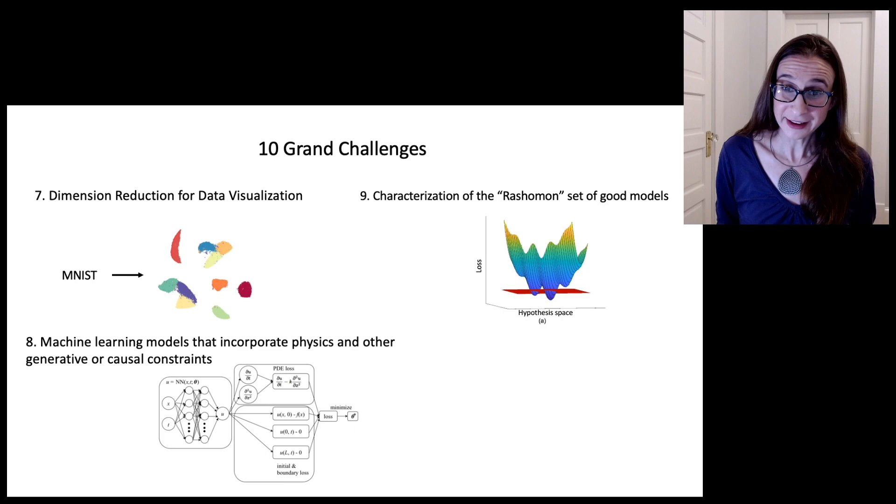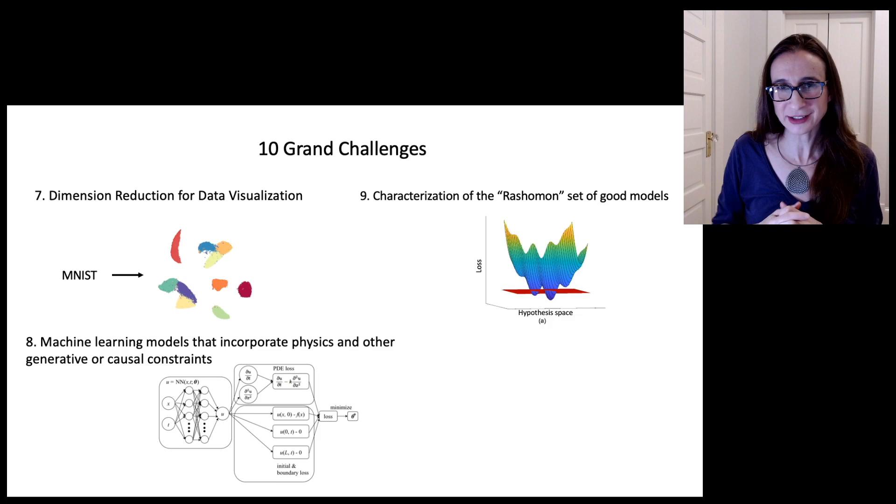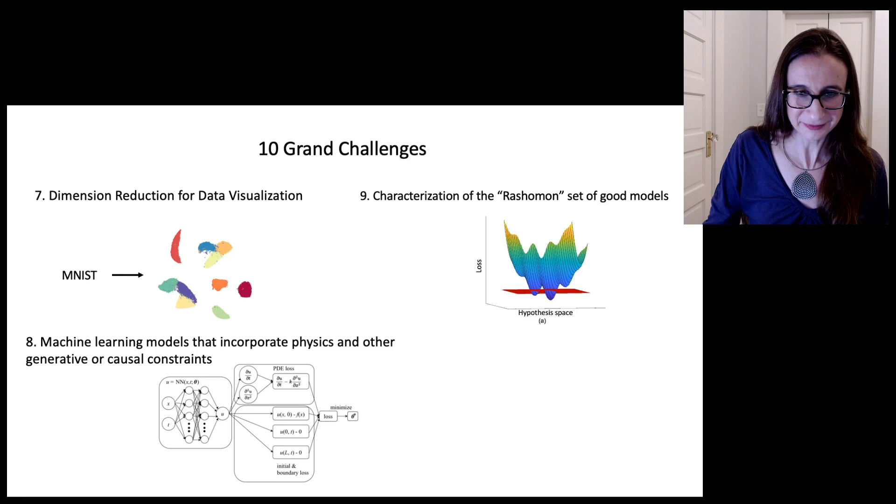And the ninth challenge has to do with characterization of the Rashomon set of good models. Sometimes you don't just want the best model according to your loss function. You might want to look at a whole bunch of models that are good and try to understand what that set looks like so that you could pick the model that's best for your particular task at hand.